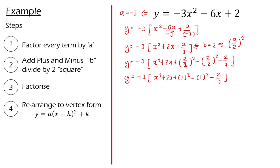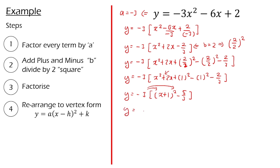Now we move on to the third step: factorize. We write the bracket, copy the front, copy the end, and we have (x + 1). To check whether our sign inside is correct, we just look at the b sign — if it's positive, the inside should be positive. Solving -1² - 2/3 gives us -5/3. Now let's multiply the -3 inside the bracket, giving us -3(x + 1)² + 5.